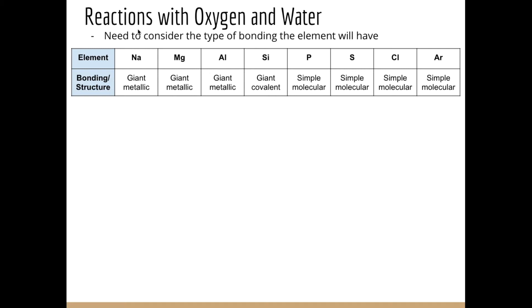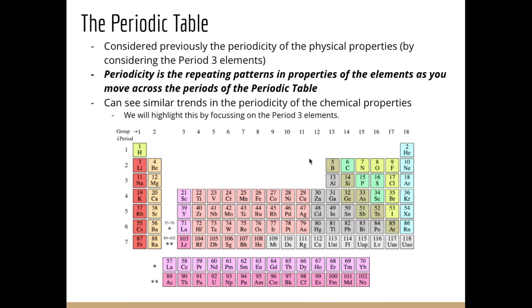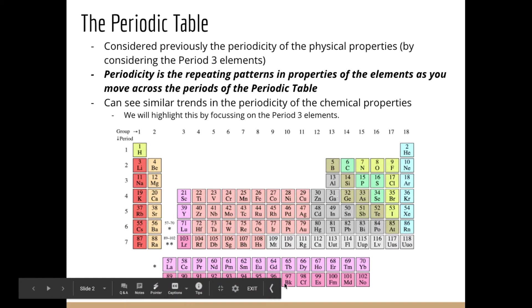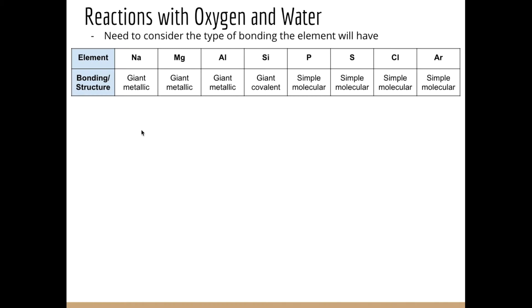Let's start by looking at the reactions that occur with oxygen and water. We need to consider, like we did with some of the physical properties of the period three elements, what the type of bonding is and what type of structure it has, because that will influence how it reacts chemically. On the left-hand side we have our metals — sodium, magnesium, aluminium — metallic structures. Then we have silicon, which is part of that metalloid staircase, and then we have the non-metals on the right-hand side.